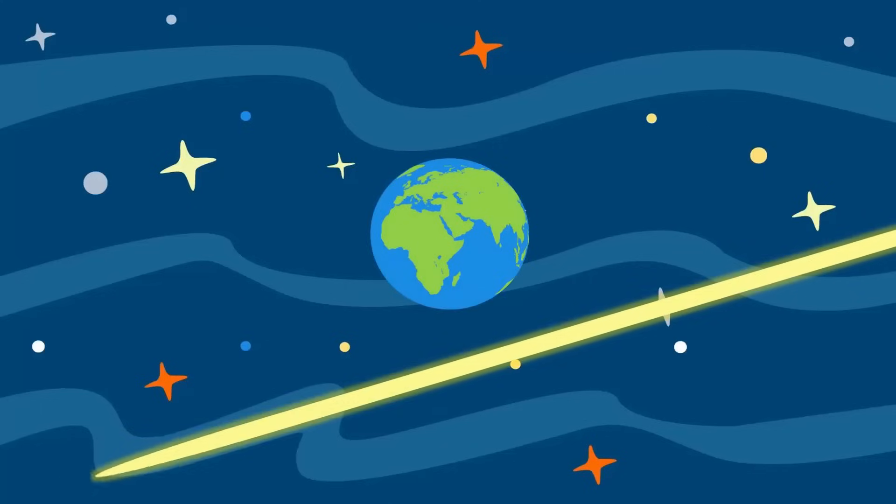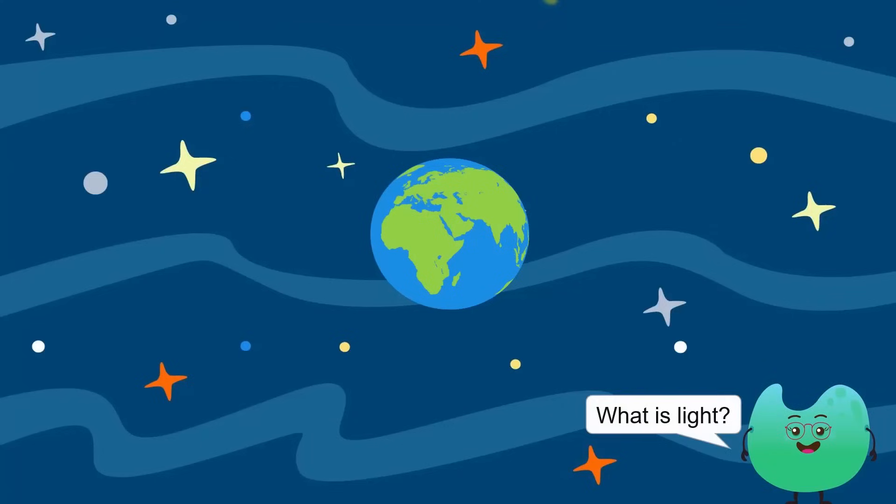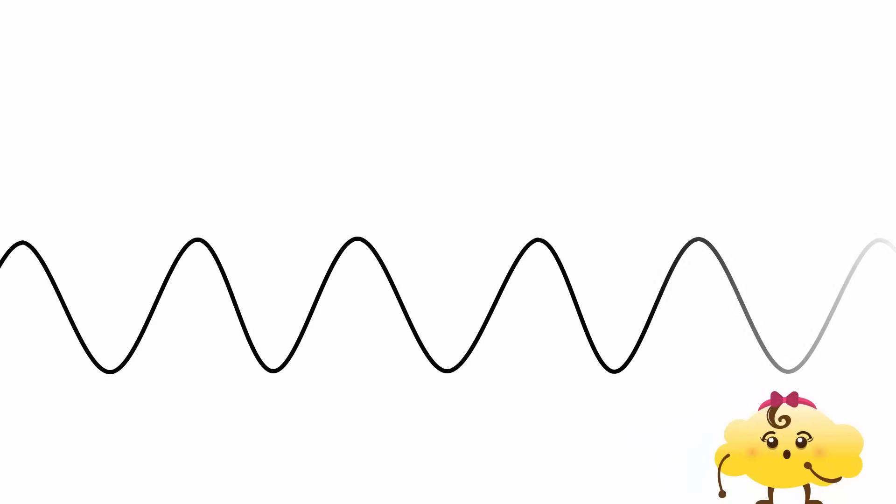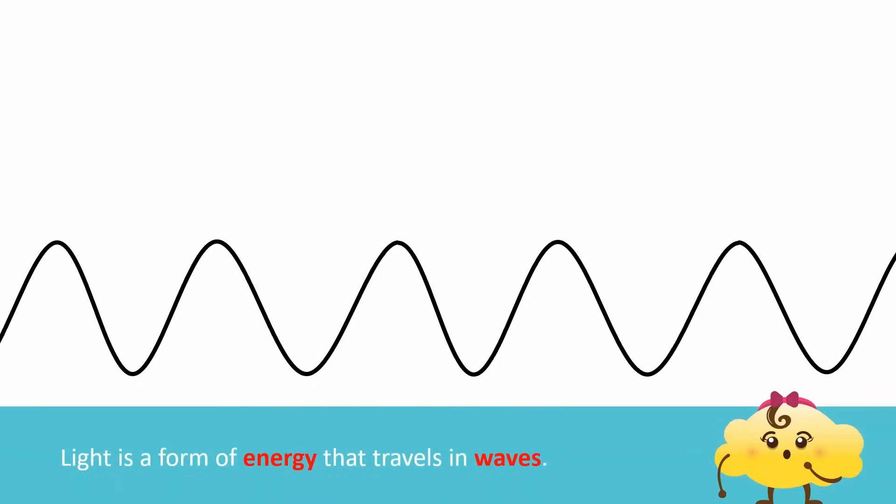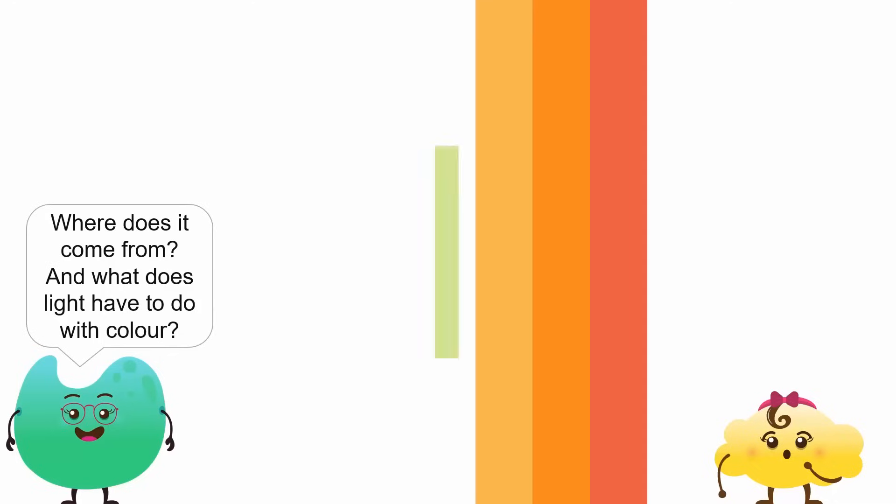Light is the connection between us and the universe. It allows us to see distant stars as well as everything around us. But what is light? Light is a form of energy that travels in waves. It's all around us. But where does it come from, and what does light have to do with color?